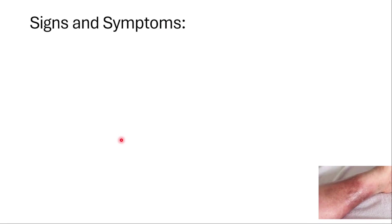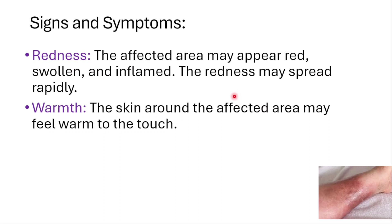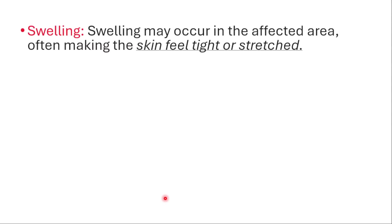Signs and symptoms of cellulitis include redness — the affected area may appear red, swollen, and inflamed, and the redness may spread rapidly. The skin around the affected area may feel warm to the touch. The affected area may also be painful or tender, especially when touched or pressed.